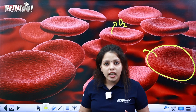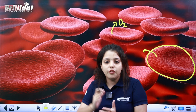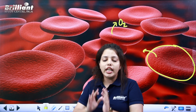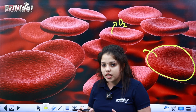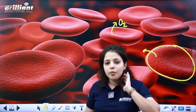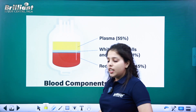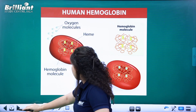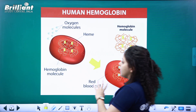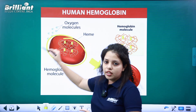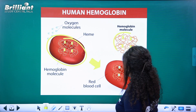What is hemoglobin? Hemoglobin carries oxygen around the body — different parts of the body. Hemoglobin is a molecule present in RBC. It is a protein molecule. Hemoglobin carries oxygen molecules.